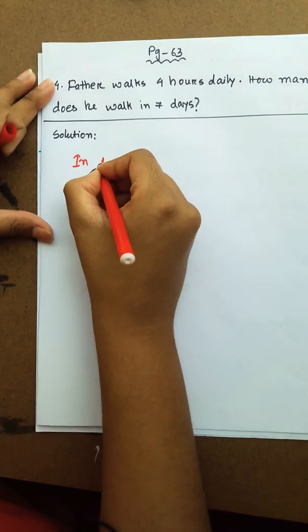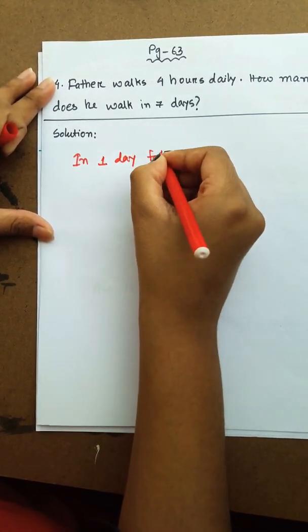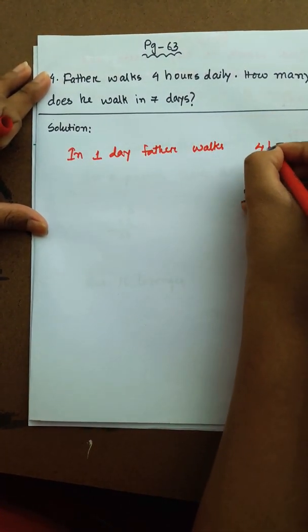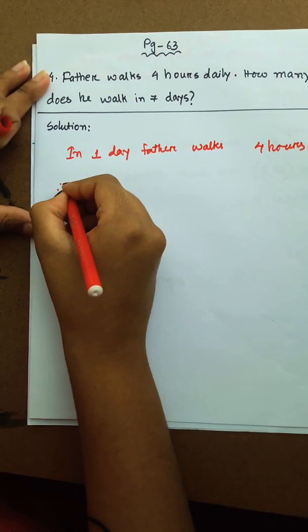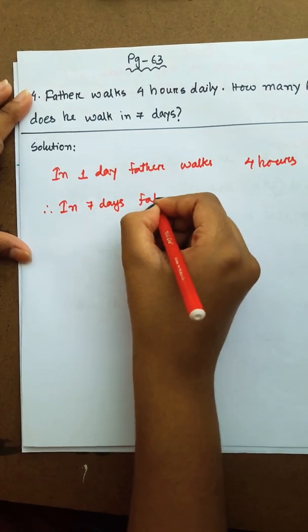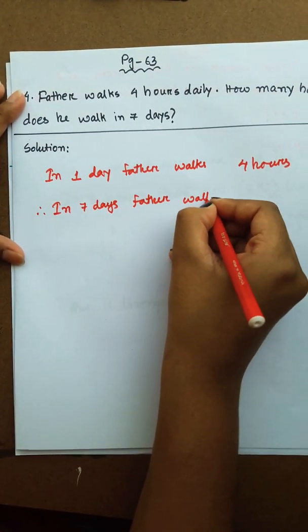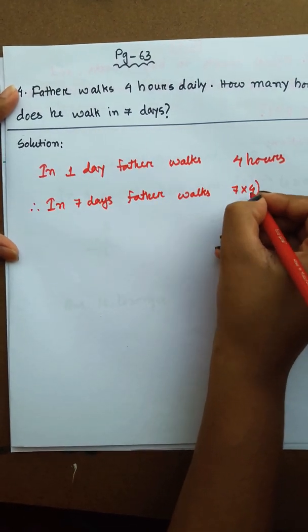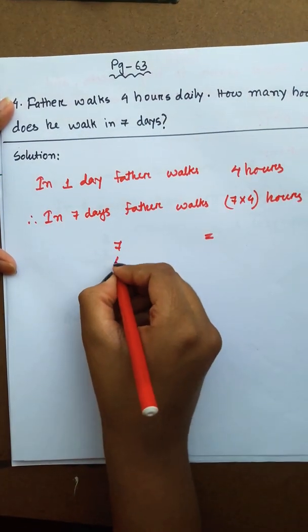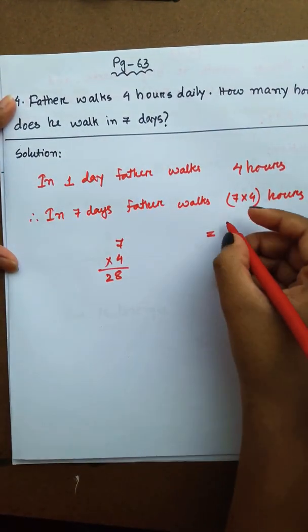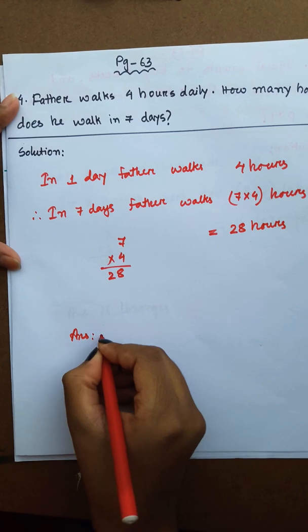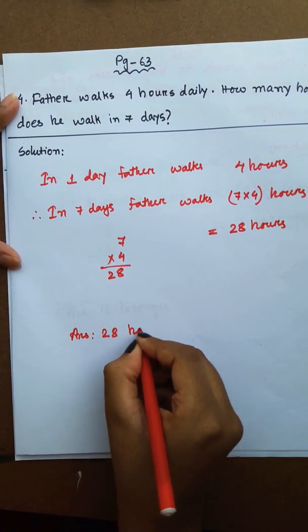In one day, Father walks 4 hours. Therefore, in 7 days, Father walks 7 into 4 hours. 7 into 4 is 28, which equals 28 hours. So answer is 28 hours.